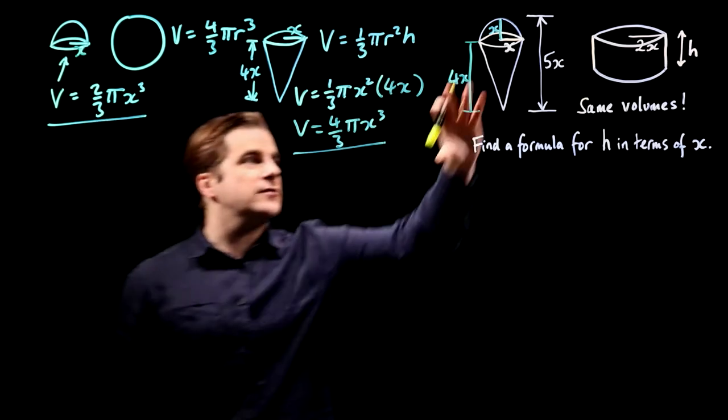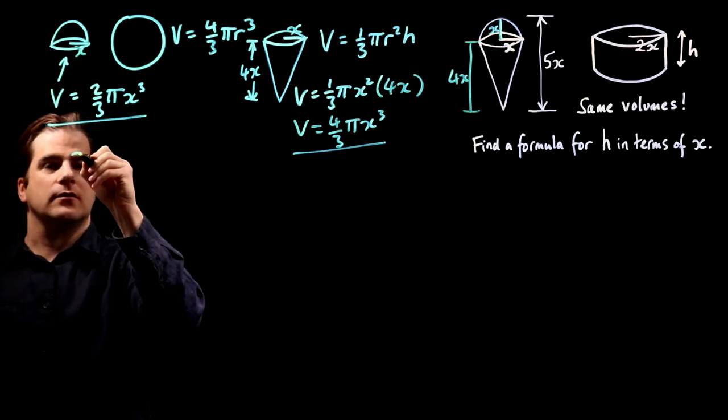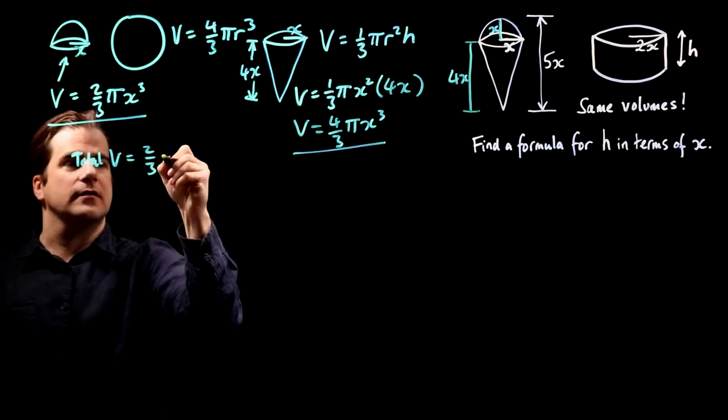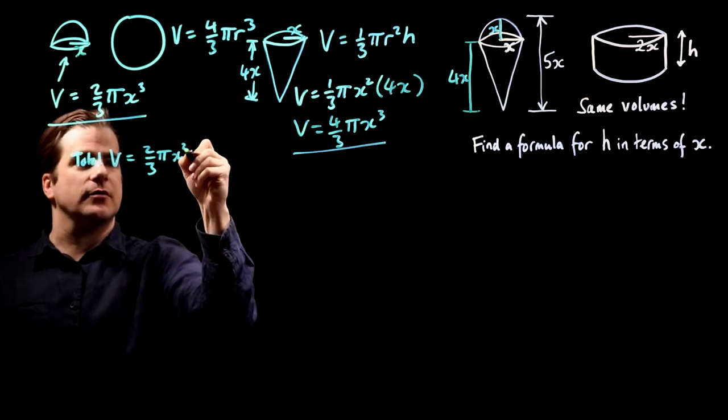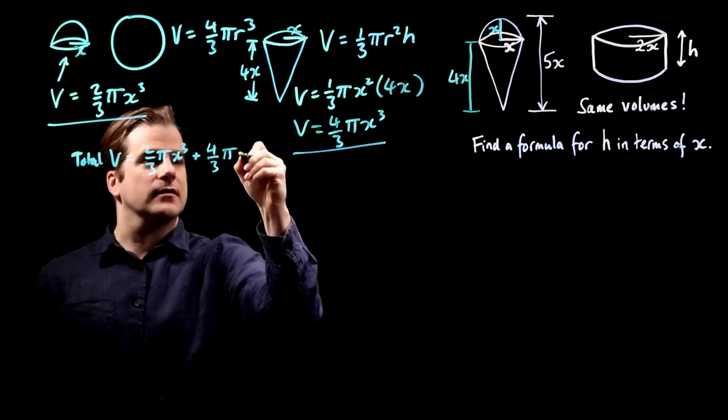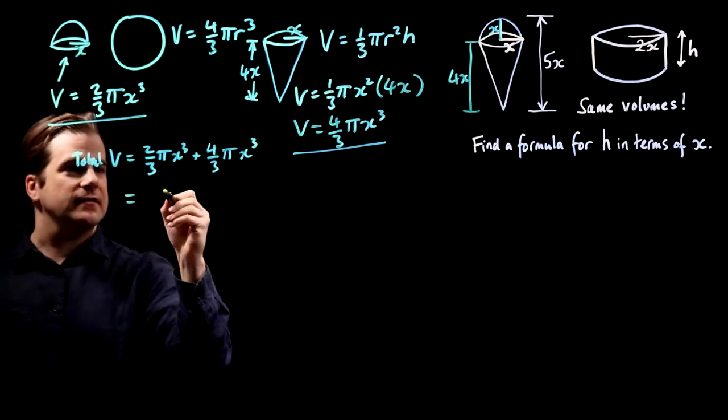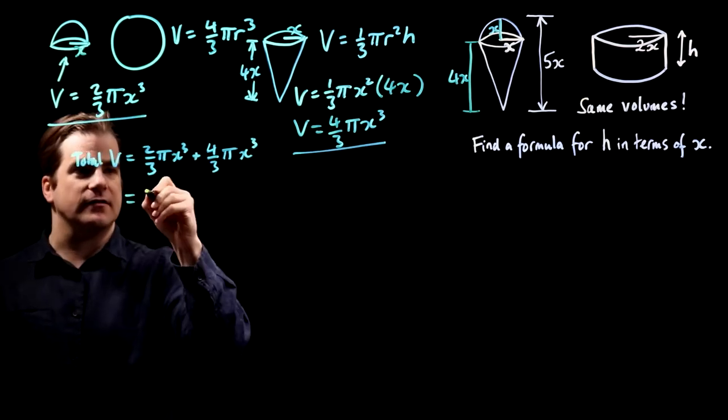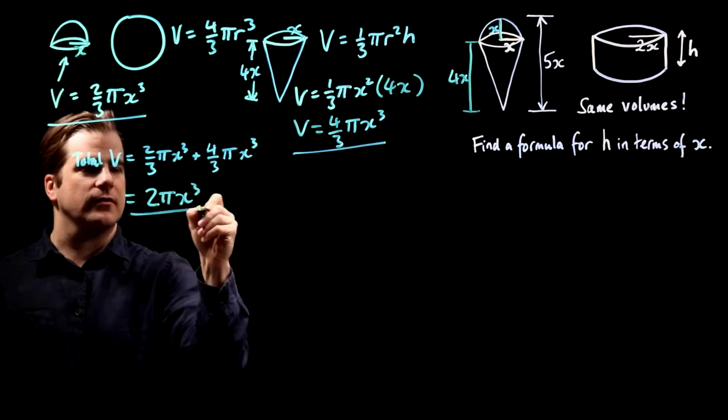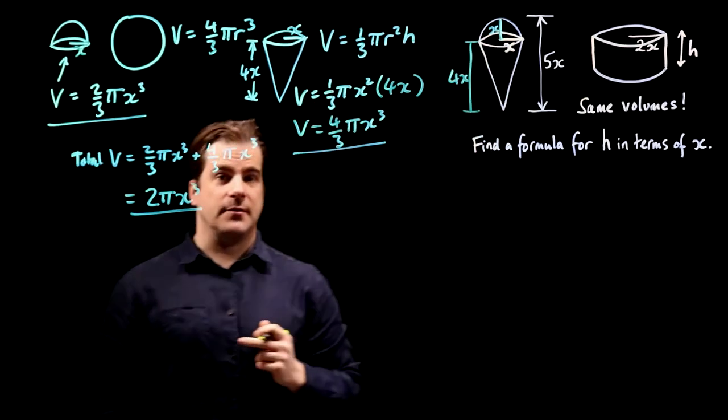So therefore, the total volume of this whole thing is 2/3 π x³ plus 4/3 π x³, which is 2 plus 4 is 6, so 6/3 is 2 π x³. So that's our expression for the volume of the ice cream and the cone.